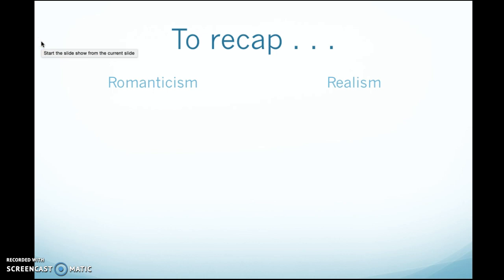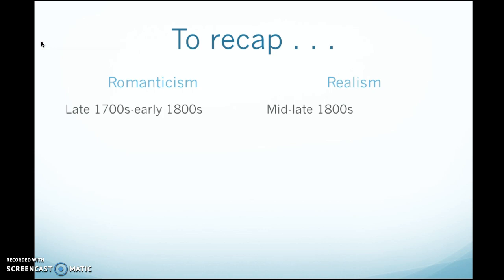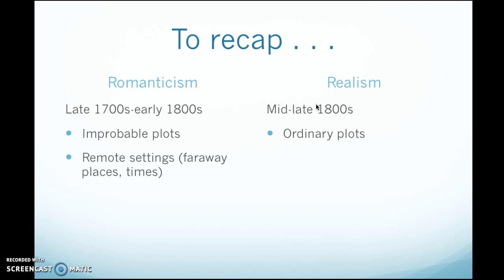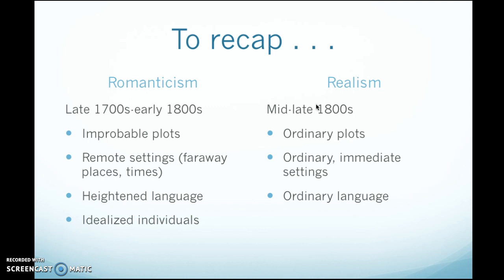To recap: before the Civil War we have Romanticism. Realism starts in the late 1800s after the Civil War — roughly 1865 to 1900. While Romantic literature featured improbable plots unlikely to happen in real life, the Realist authors featured ordinary plots, ordinary things that might feasibly happen. The Romantics set their literature in faraway places and times, but the Realists used ordinary, immediate settings. The Romantics used heightened language with idealized individuals, while the Realists used ordinary language and ordinary characters. See that word 'ordinary' over and over again. And finally, Realists had a didactic purpose — they wanted to instruct.